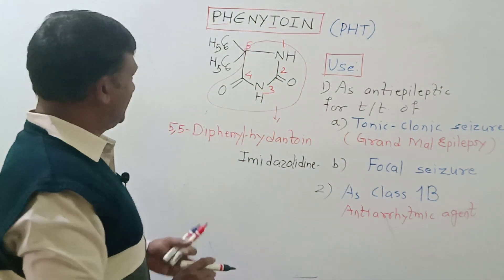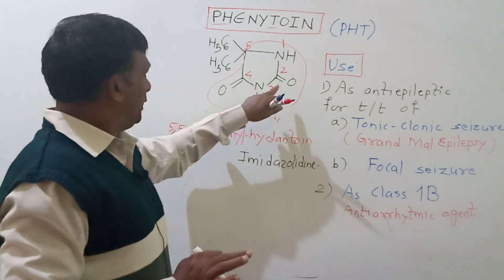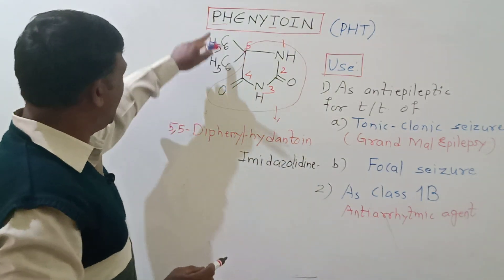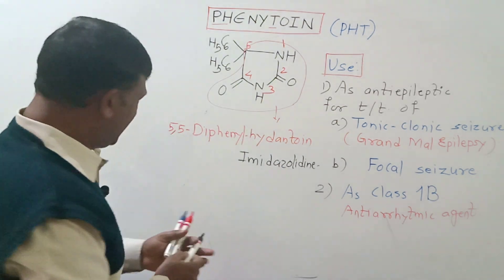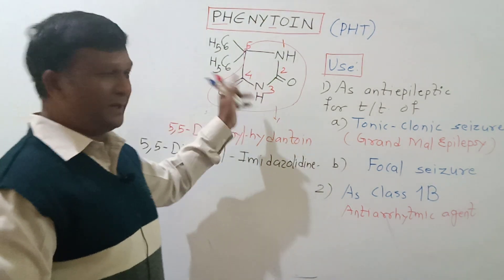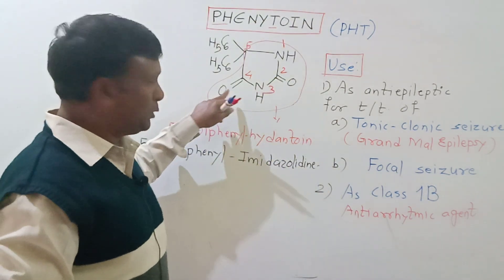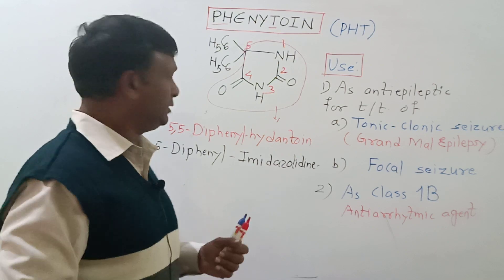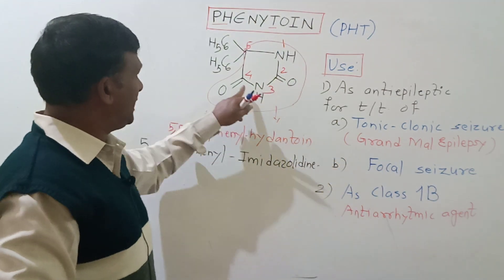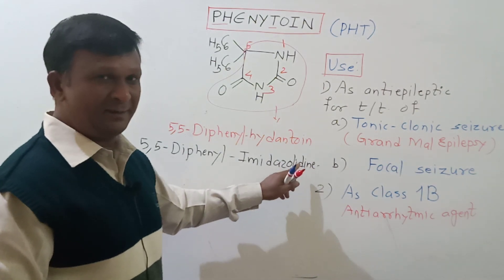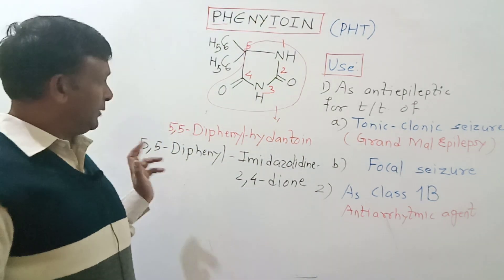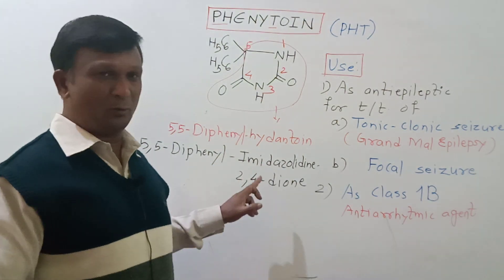In the imidazolidine ring there is presence of three substituents: one at position two, one at position four, and two substituents at position five. On five we have two phenyl rings, so we call it 5,5-diphenyl. The basic nucleus is imidazolidine. This double bond O is considered as a ketone, so imidazolidine is suffixed with 'one'. These two groups are present at positions two and four, so imidazolidine is suffixed with 2,4-dione. The name will be 5,5-diphenylimidazolidine-2,4-dione.